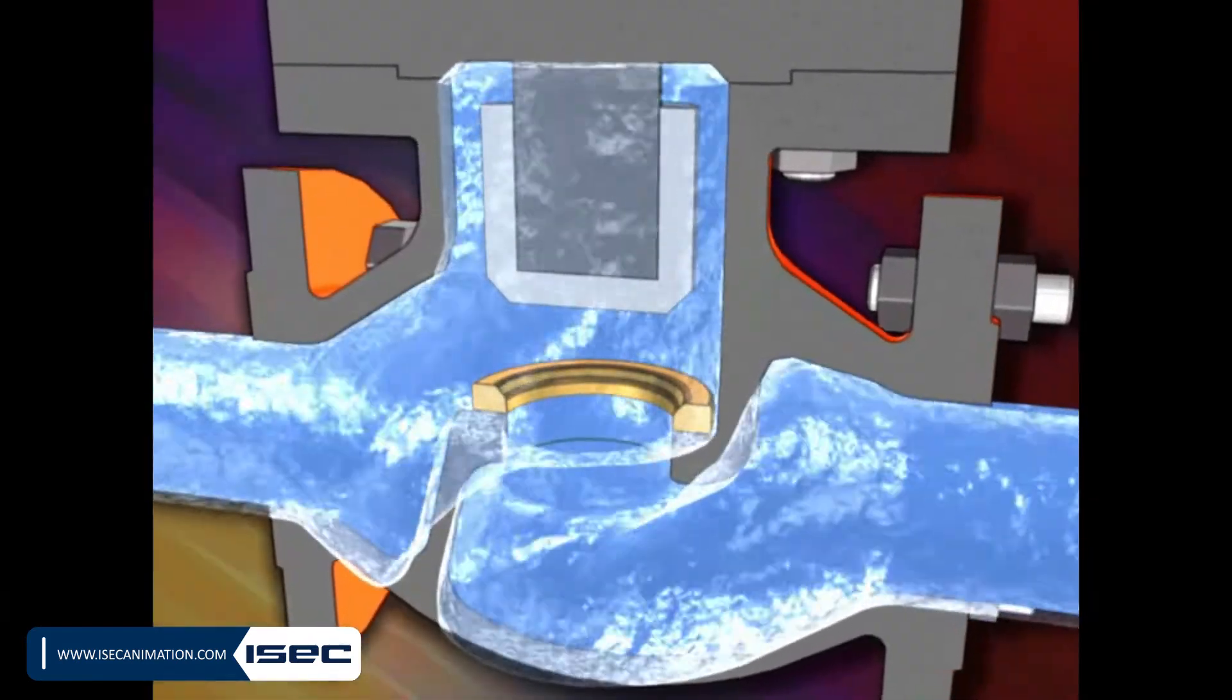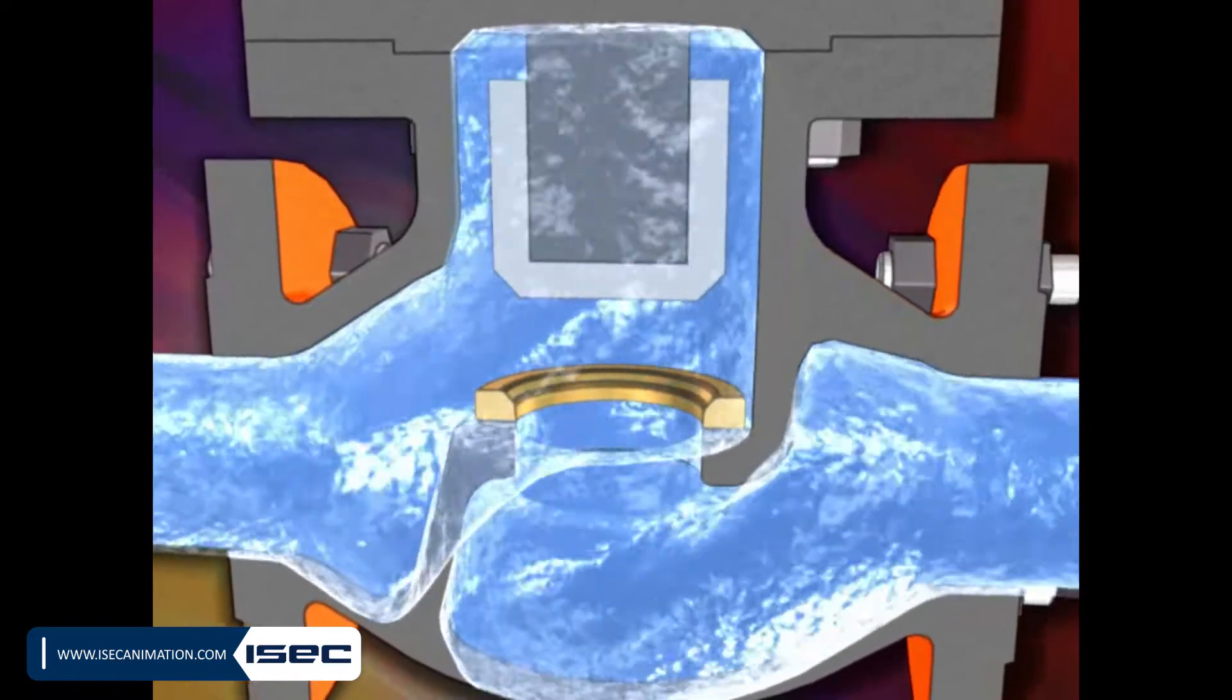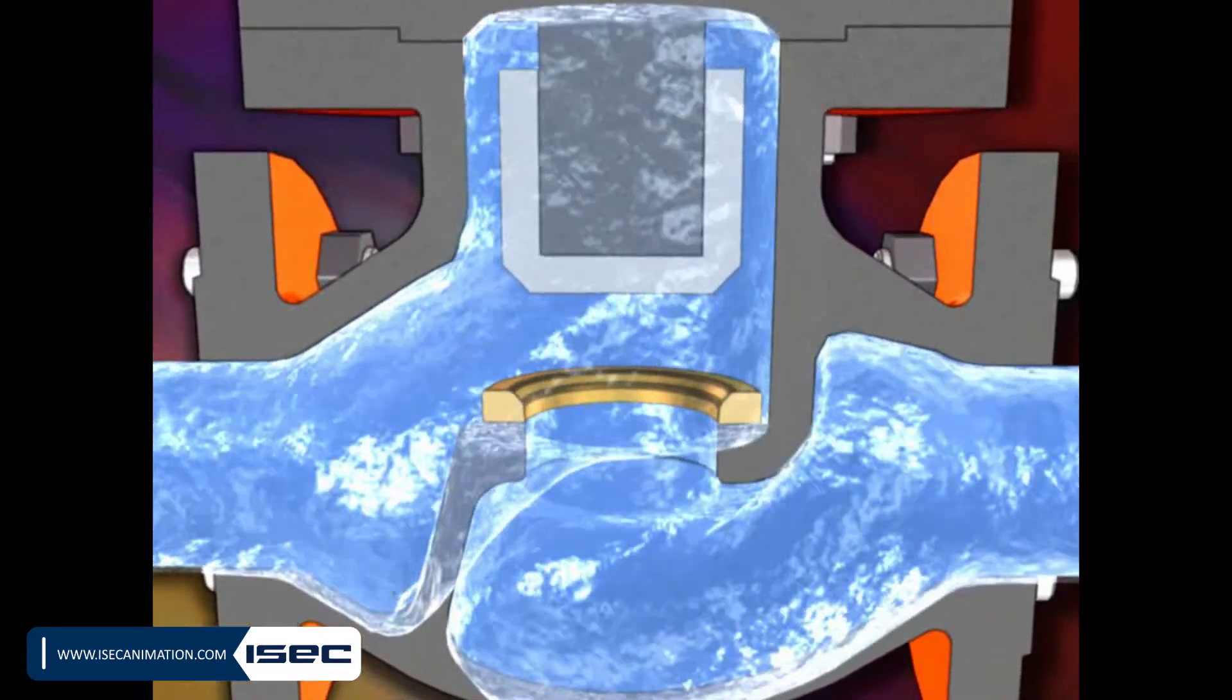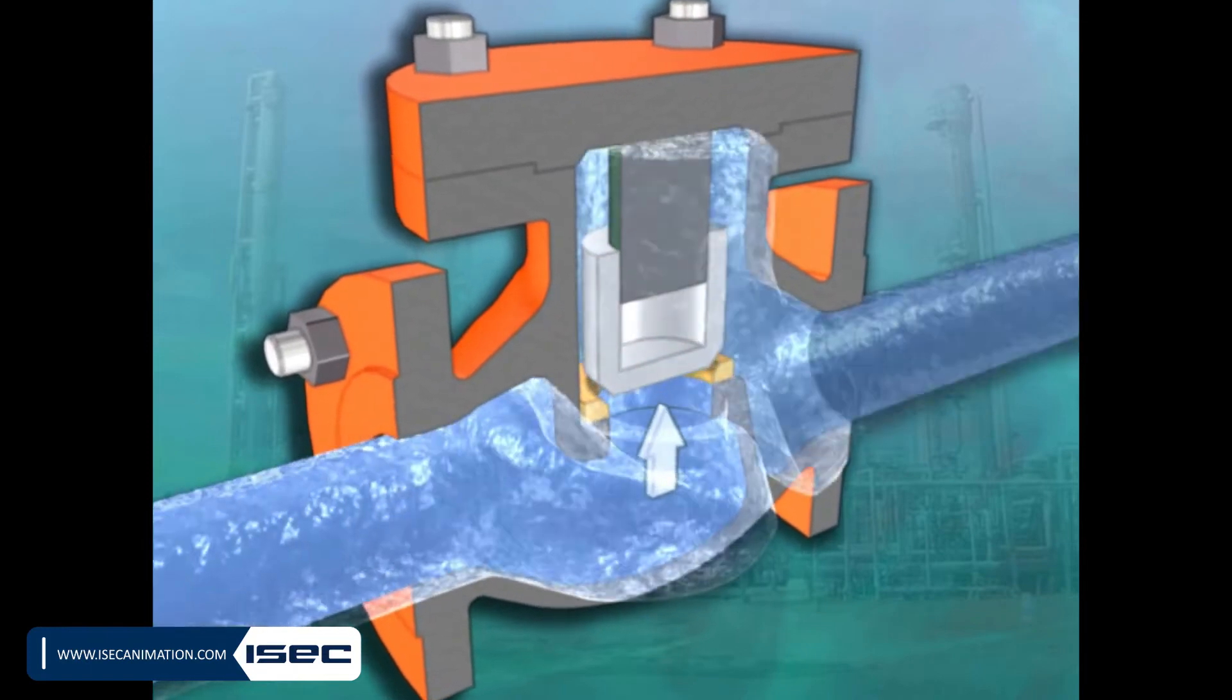The check valves are divided into three groups according to the movement of the disc. 1. Lift check valve.